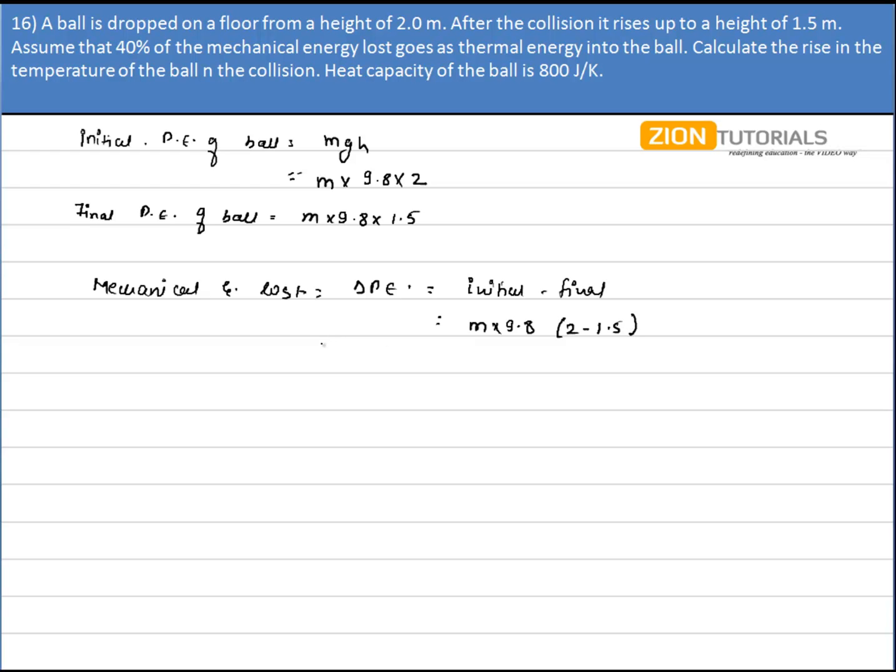Now 40% of this mechanical energy goes to thermal energy. So the thermal energy is 40% of the mechanical energy, that is, mass times 9.8 times 0.5.